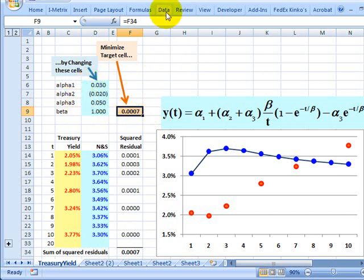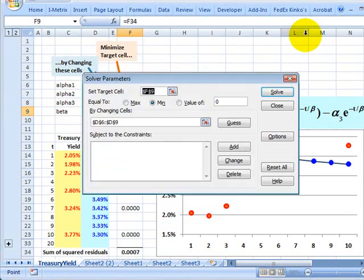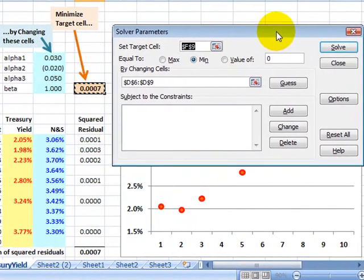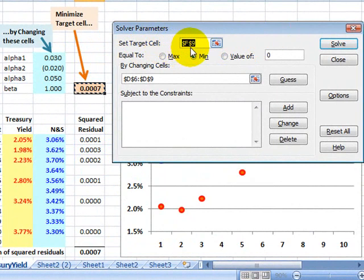So if I go up to data and click solver, I get set the target cell and the target cell is this right here. That's the sum of squared residuals. And I want to minimize it. So I select minimize.